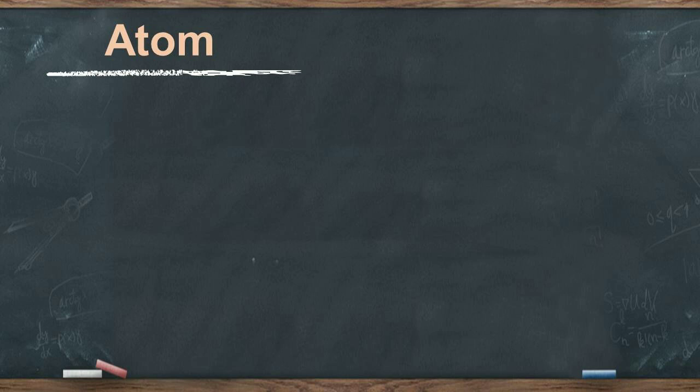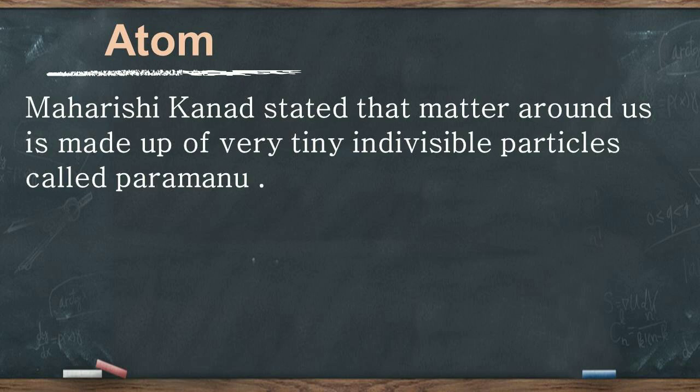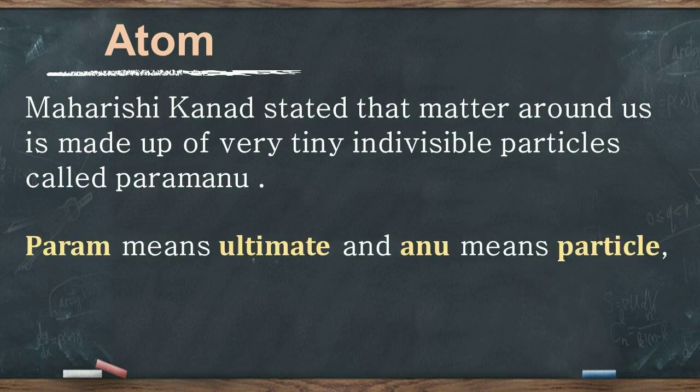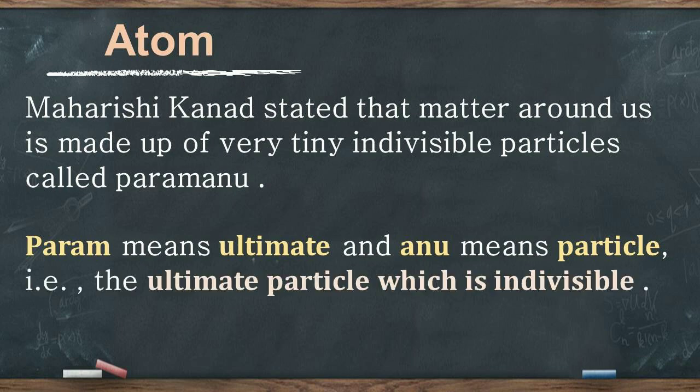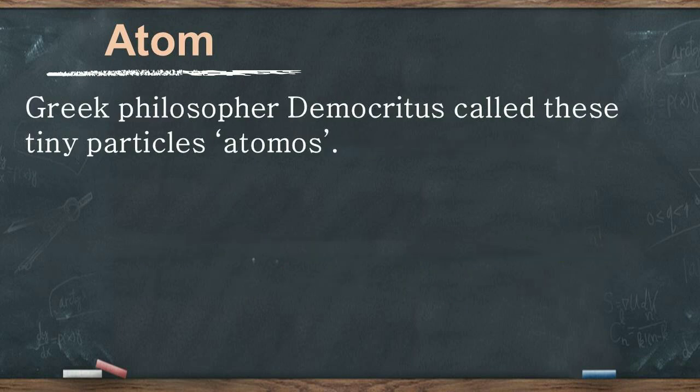Talking about the ancient concept of an atom, around 1000 years ago, a great Indian philosopher, Maharishi Kanad, stated that matter is made up of tiny indivisible particles called Parmanu. Param means ultimate and Anu means particle, i.e., the ultimate particle which is indivisible. Greek philosopher Democritus also proposed the same concept like Maharishi Kanad.